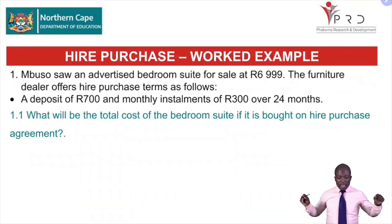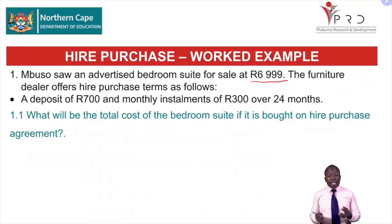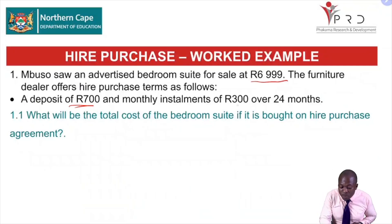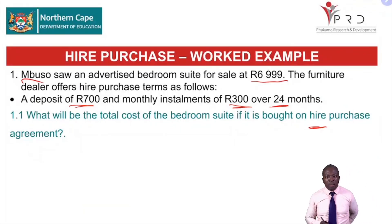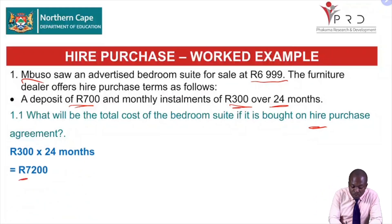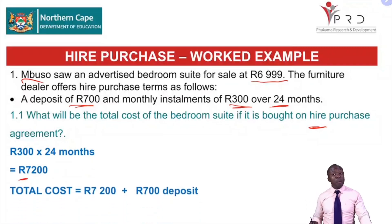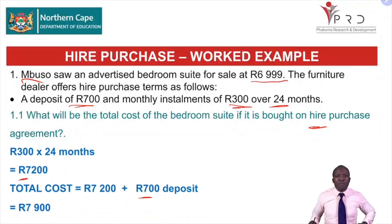Here we have Mbuzu. He saw an advert for a bedroom suite costing 6,999 rand. The shop offered him a deal: pay a 700 rand deposit, then 300 rand every month over 24 months. To find the total cost, we multiply 300 by 24 to get 7,200, then add the 700 deposit. So all in all, Mbuzu is going to pay 7,900 rand for the furniture. Well done if you got it correct.